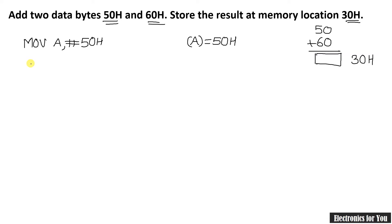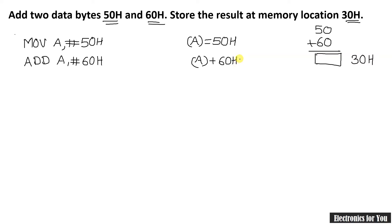In the next instruction we use the ADD instruction. 50h is already in the accumulator and we have to write the second operand, which is 60h. I am using: ADD A, #60h. This means the content of the accumulator — which is 50h — plus 60h. The result of this addition is automatically stored into the accumulator.